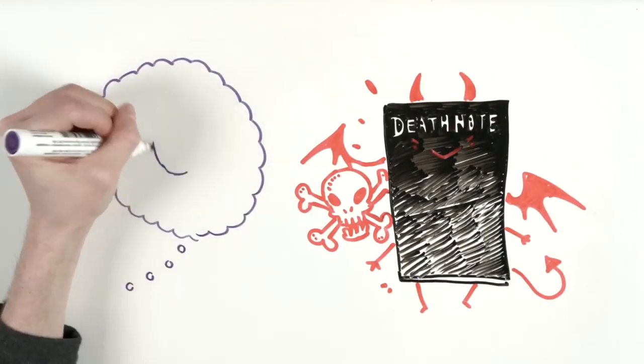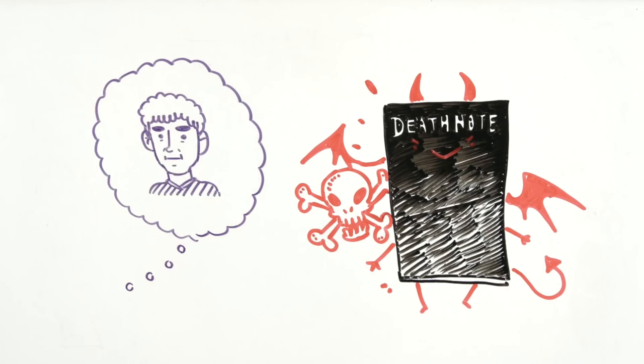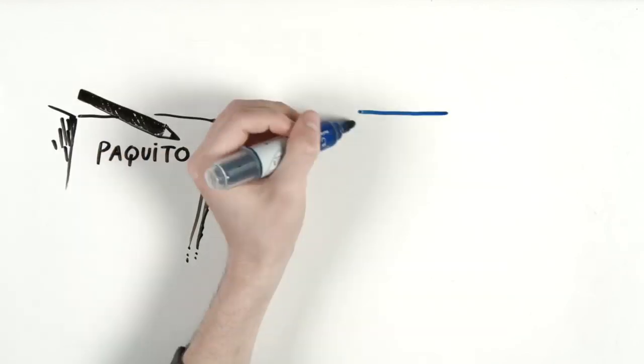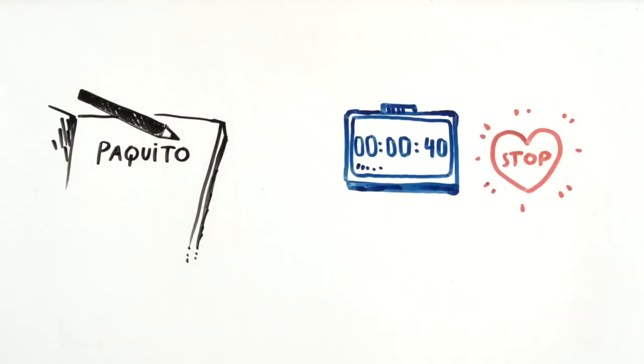This is to prevent people who share the same name from being affected. At first, the victim dies of a heart attack in 40 seconds. However, if the cause of death is written within 40 seconds of the subject's name, it will happen. By the way,